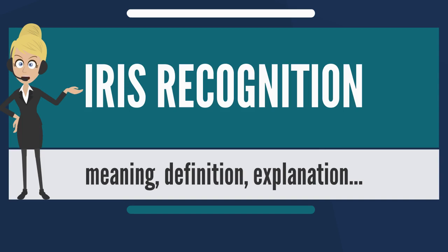Criminals could exploit this flaw to steal the identities of others. The first study on surgical patients involved modern cataract surgery and showed that it can change iris texture in such a way that iris pattern recognition is no longer feasible, or the probability of falsely rejected subjects is increased. As with most other biometric identification technology, a still not satisfactorily solved problem with iris recognition is the problem of live tissue verification.